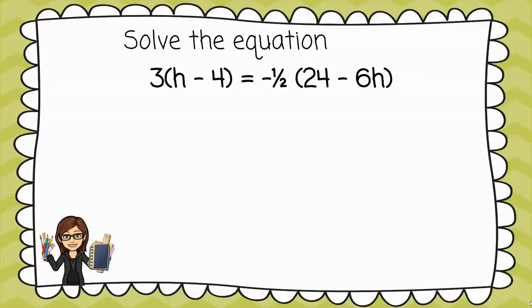In this video we'll look at solving the equation. Here we're going to begin with a little distributive property. On the left side of the equation I'm going to distribute 3 to the h and the negative 4. On the right hand side of the equation I'm going to distribute the negative one-half to the 24 and to the minus 6h.